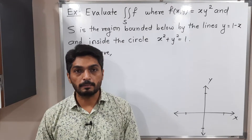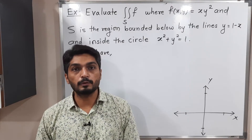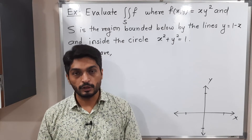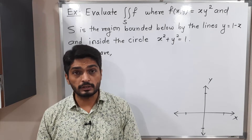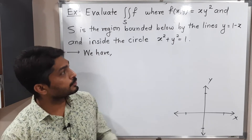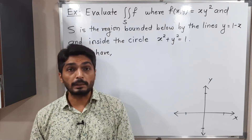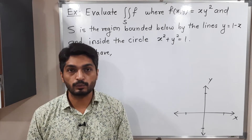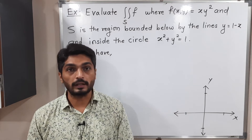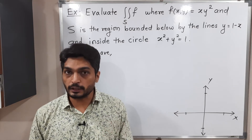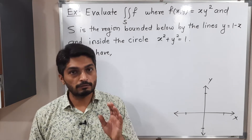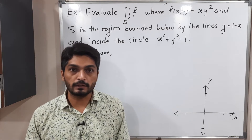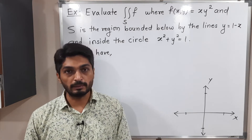Let us discuss this example. We have to solve this double integration where the region is bounded by y = 1 minus x and x² + y² = 1. Let us find the region of integration first, then find the limits of integration, and then solve the actual double integration.